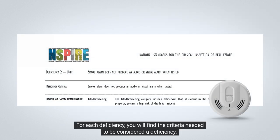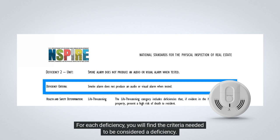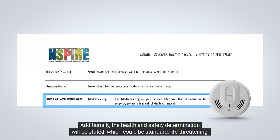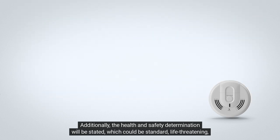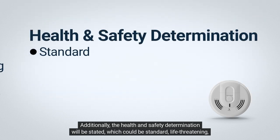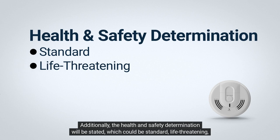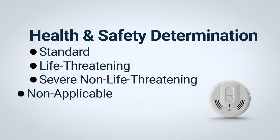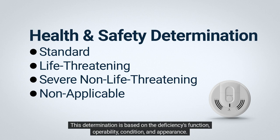For each deficiency, you will find the criteria needed to be considered a deficiency. Additionally, the health and safety determination will be stated, which could be standard, life-threatening, severe non-life-threatening, or non-applicable. This determination is based on the deficiency's function, operability, condition, and appearance.